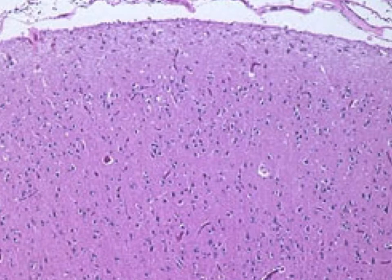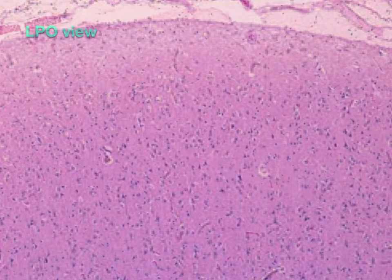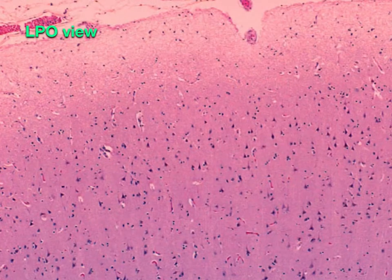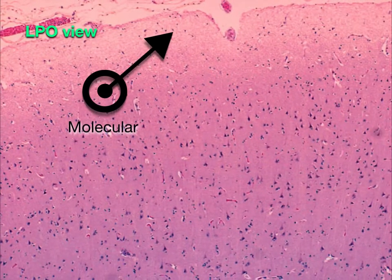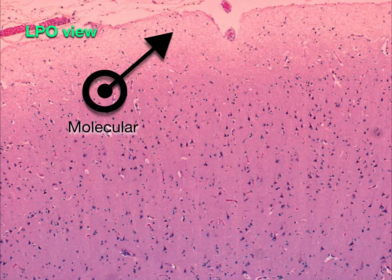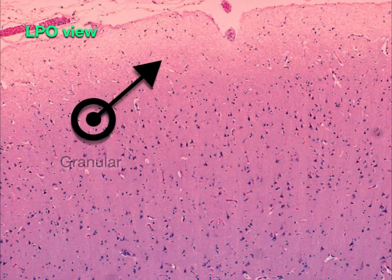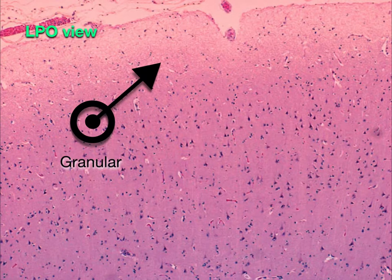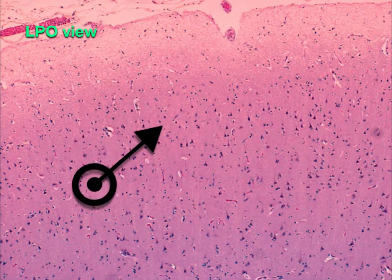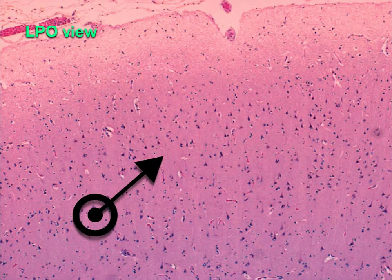Let us shift to LPO. The cerebral cortex is made up of six sublayers; however, under HE stain only three of the six sublayers are visible. The most superficial is the molecular layer. Below the molecular layer is the granular layer. Below the granular layer, we can find a characteristic cell of the cerebral cortex, which is the pyramidal cell. Let us now shift to HPO to view the pyramidal cells.